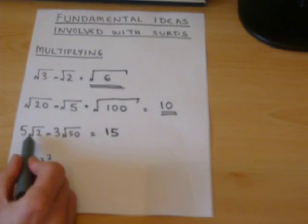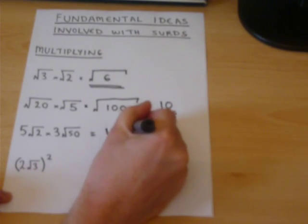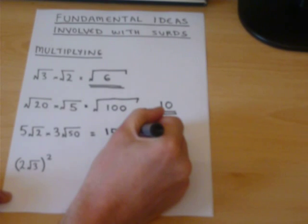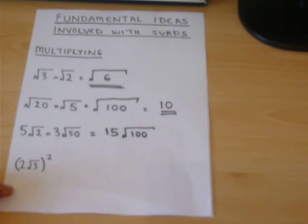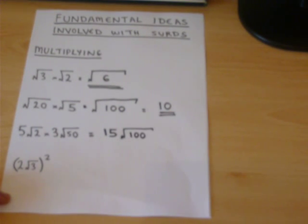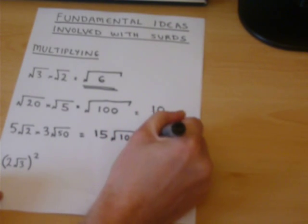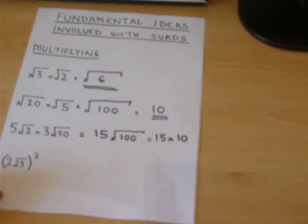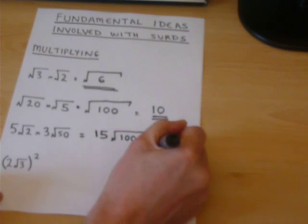Then square root of two times fifty which is one hundred. But we can work out what the square root of a hundred is. It is ten and fifteen times ten is one hundred and fifty.